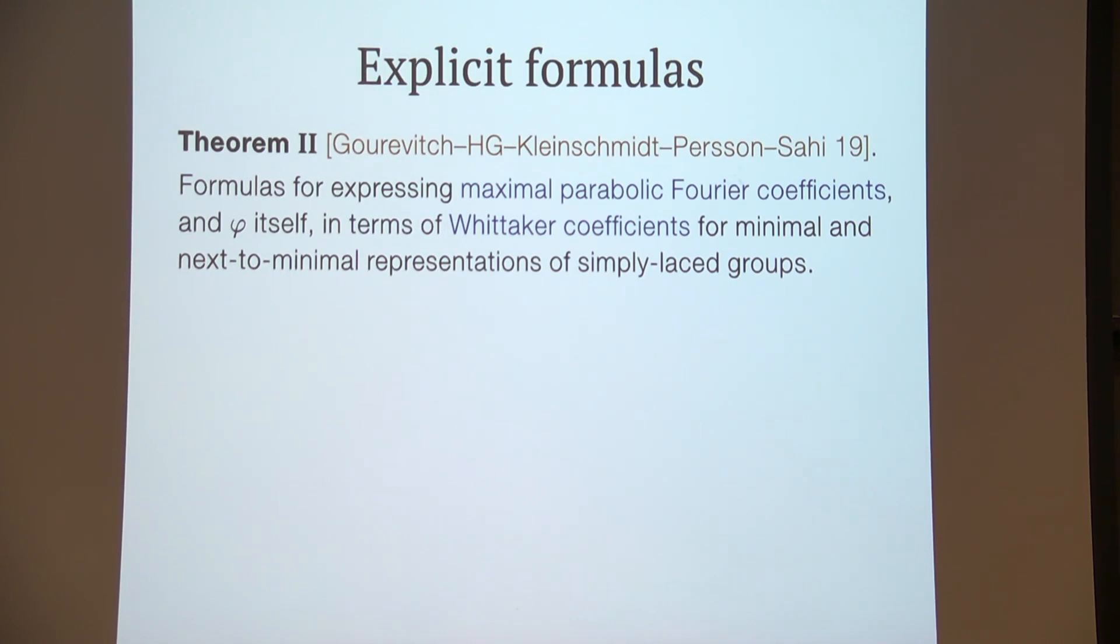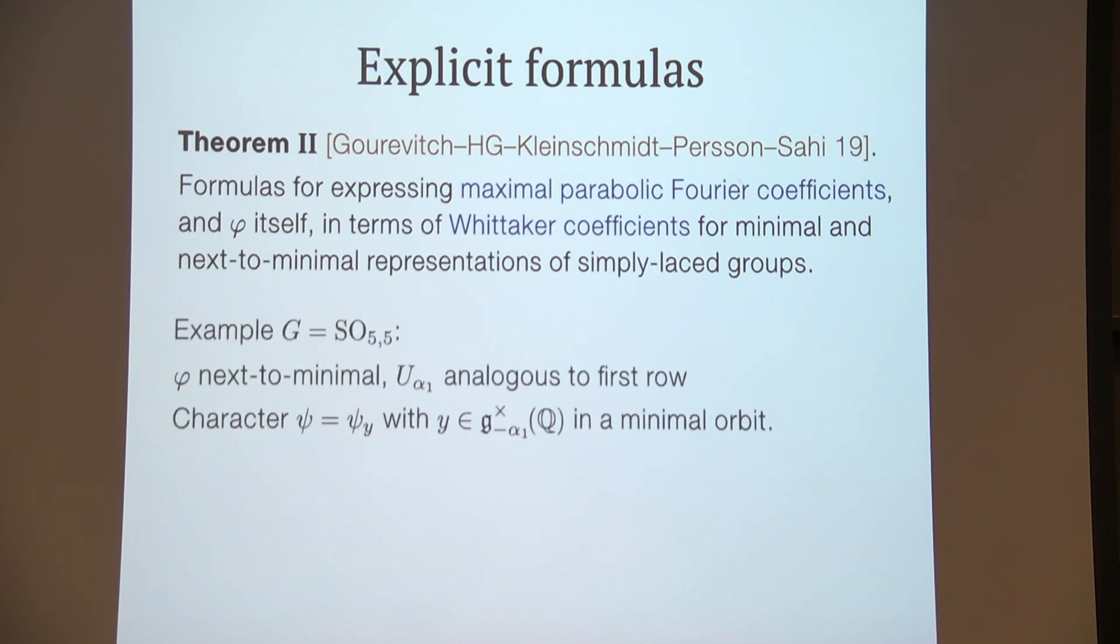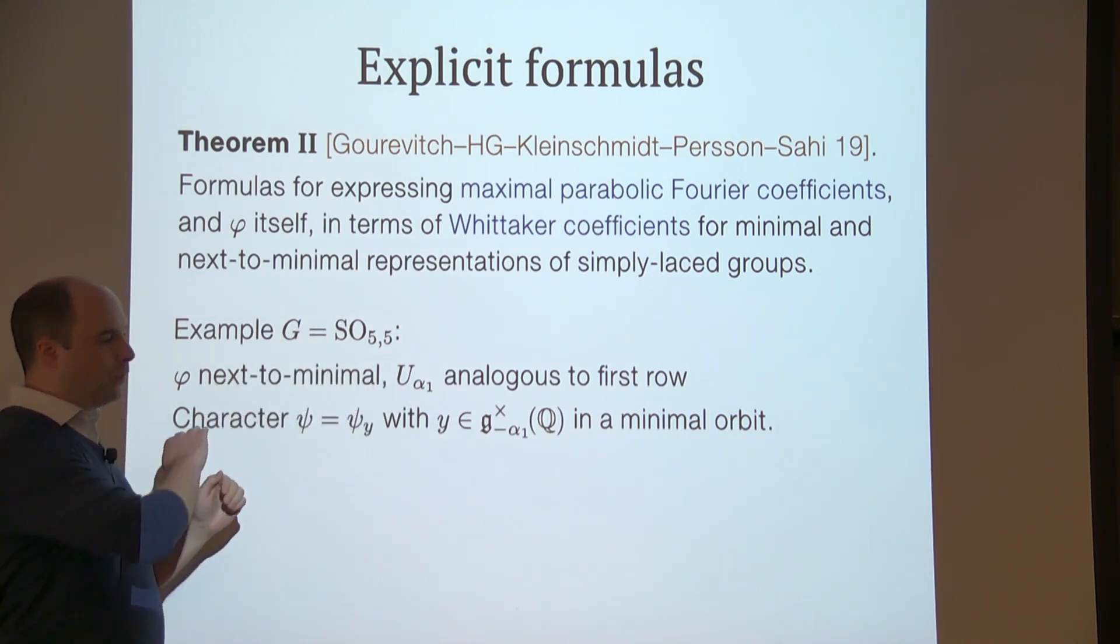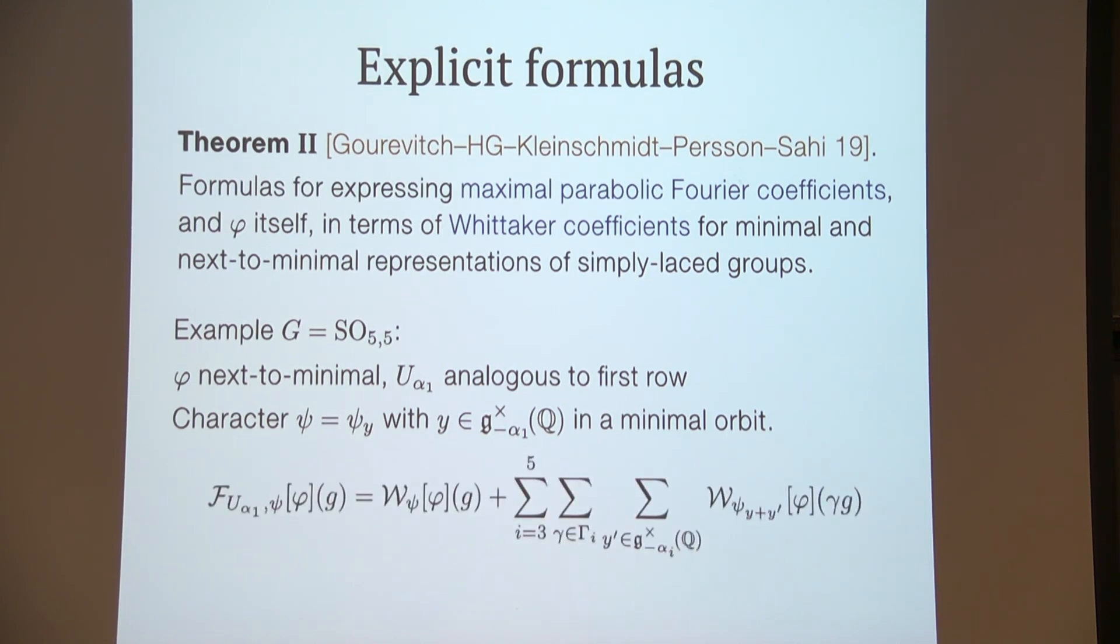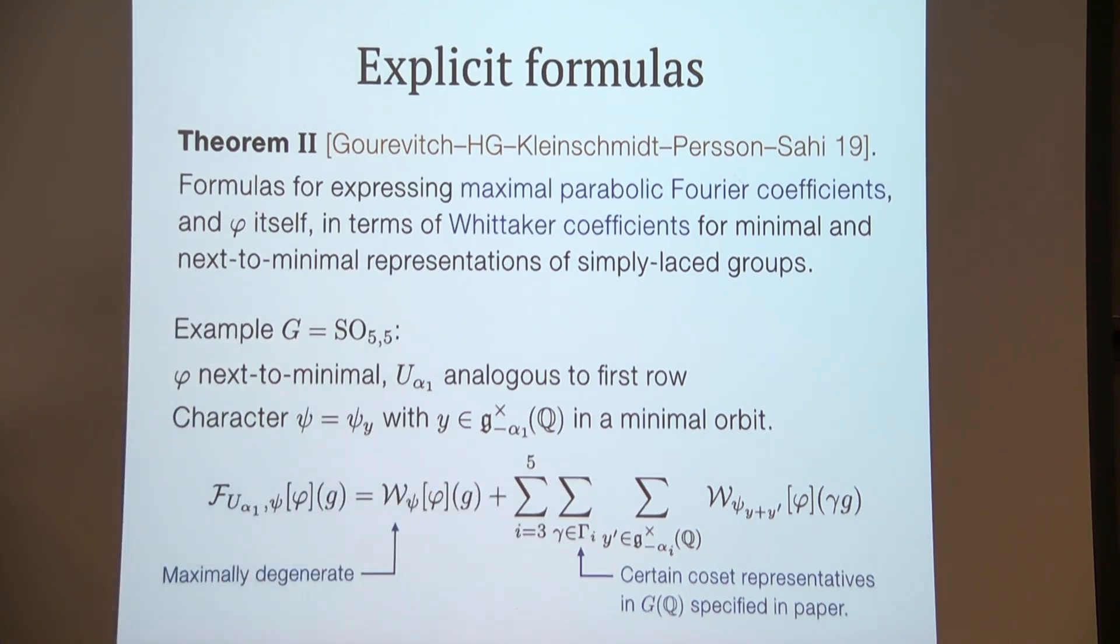So I won't be able to give the full formulas here, but let's take an example: SO(5,5). We take the automorphic form to be next-to-minimal. We take the unipotent subgroup to be analogous to what we had as the first row in the previous examples. And we remember that the character was specified by a nilpotent element in the Lie algebra, which we take to be in the minus alpha root eigenspace, and this is in a minimal nilpotent orbit. Then the associated Fourier coefficient on this unipotent with this character is expressed like this. For next-to-minimal representation, first we have what is called a maximal degenerate Whittaker coefficient, so it looks like a Whittaker coefficient for SL2. Then we have a sum over translated Whittaker coefficients supported on two orthogonal simple roots, so it looks like Whittaker coefficients on SL2 times SL2.